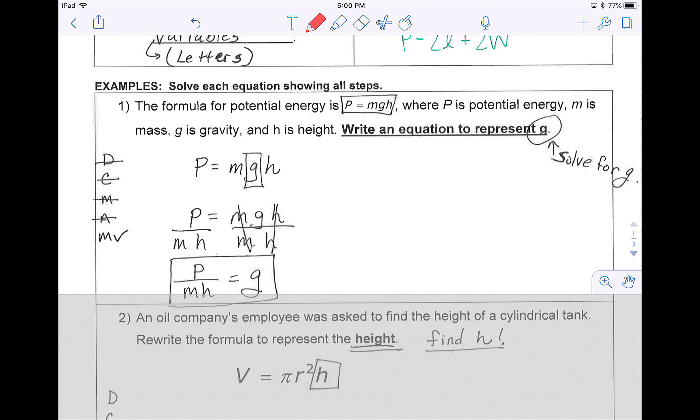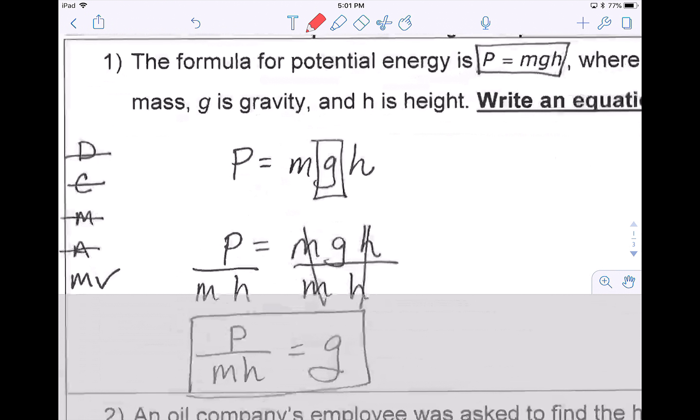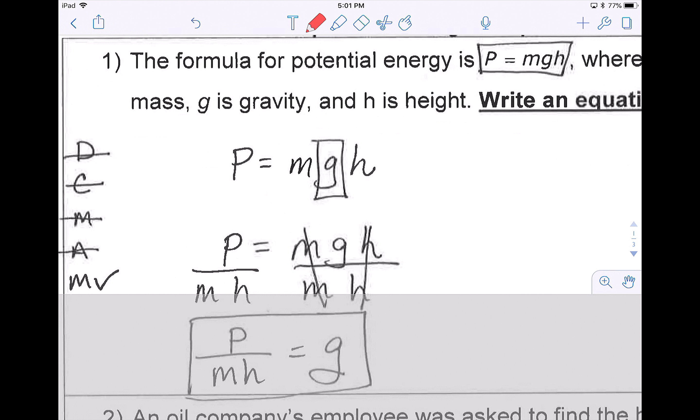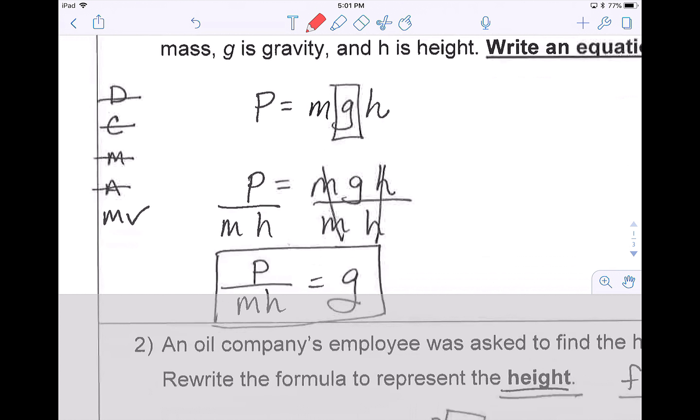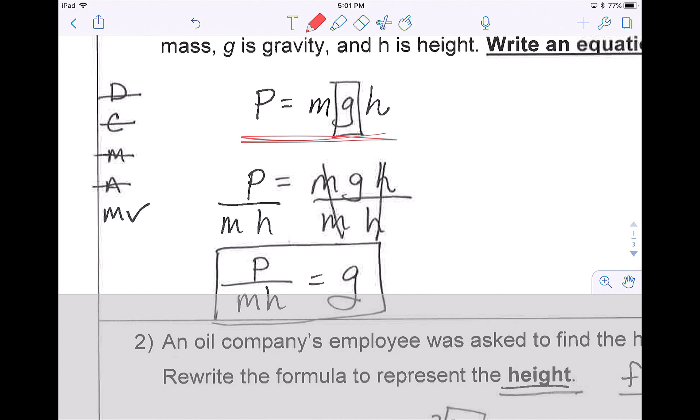So in problem one, we have the formula for potential energy here, P equals mgh, where P is potential energy, m is mass, g is gravity, and h is height. They asked me to write an equation to represent g, meaning they want me to solve for g. In my work, this comes straight from my wordy problem. So I write it down. They asked me to solve for g, so we box g just like in the past we've been solving for x.